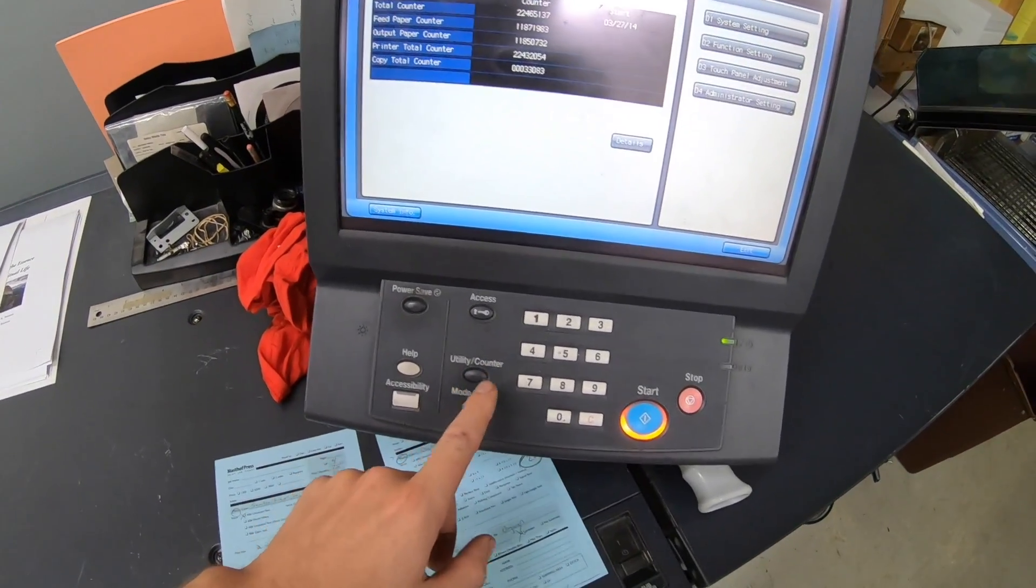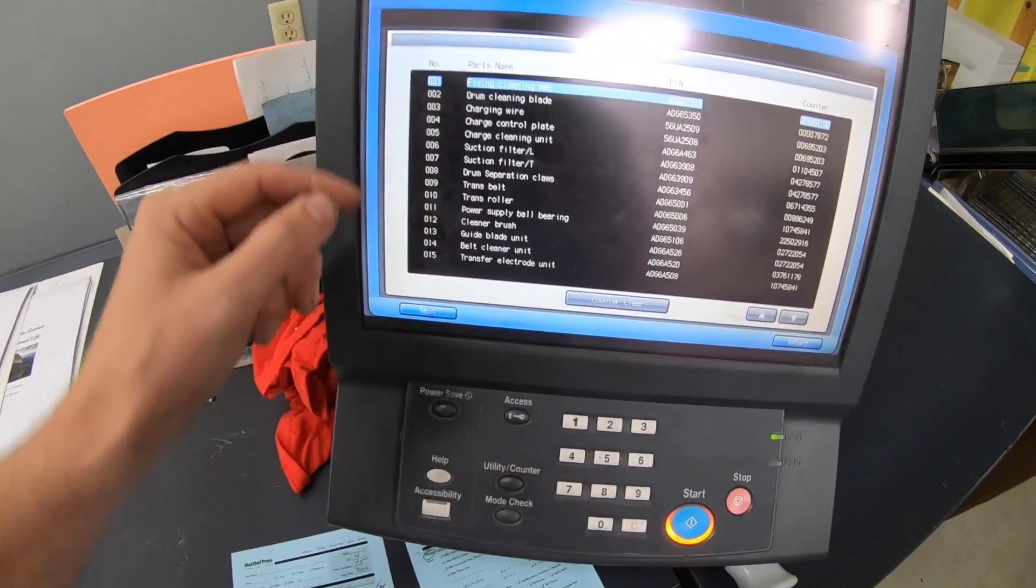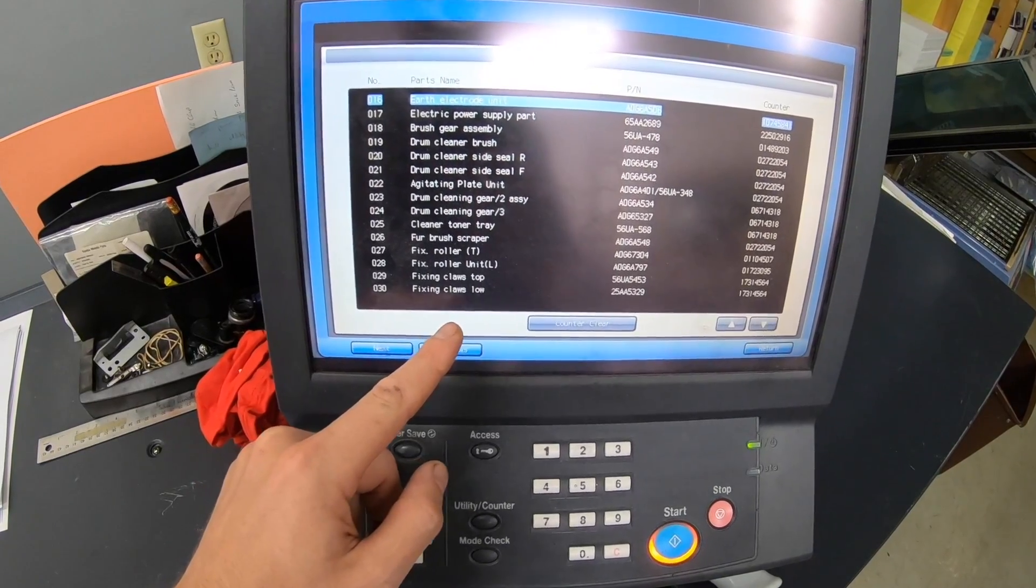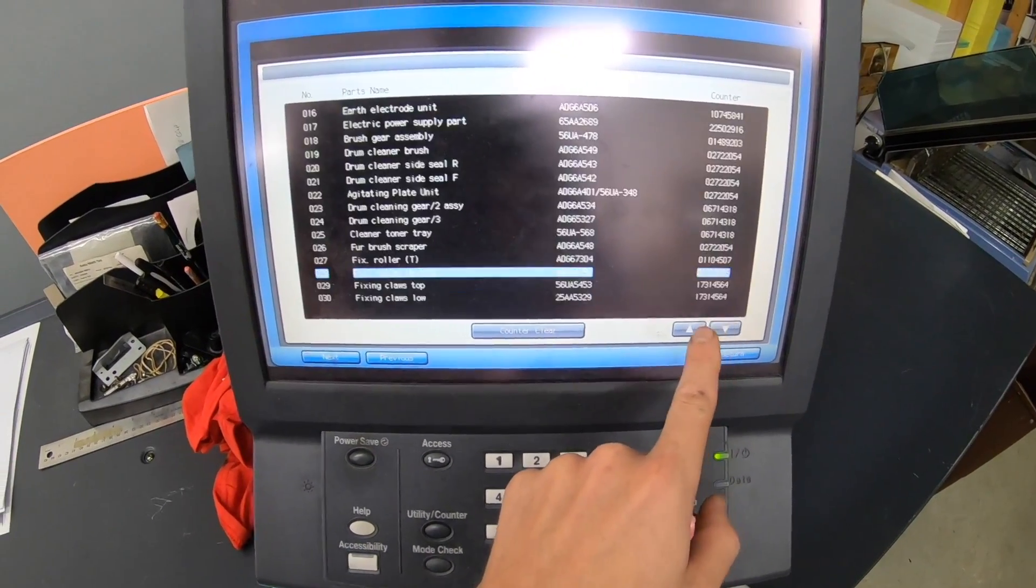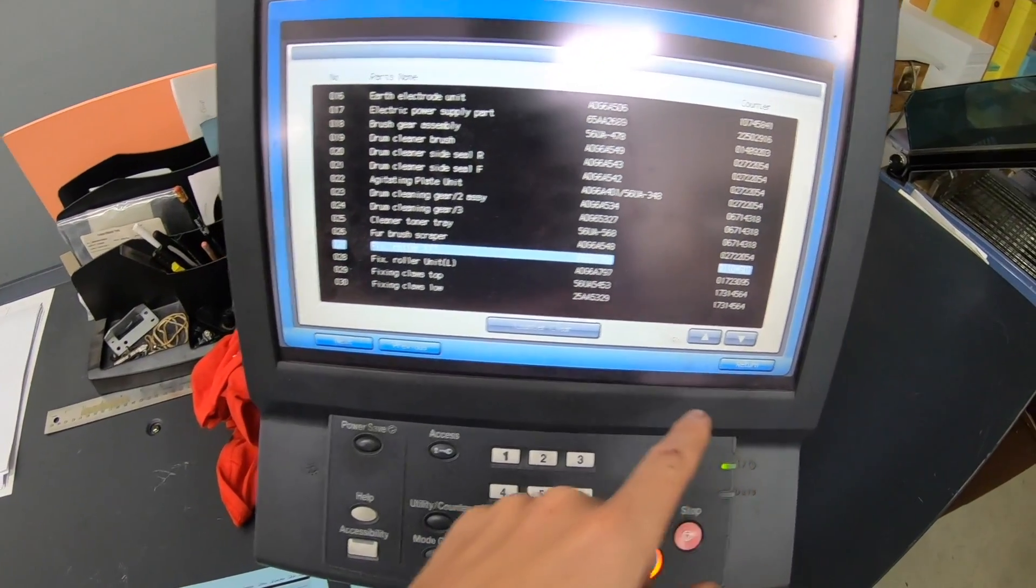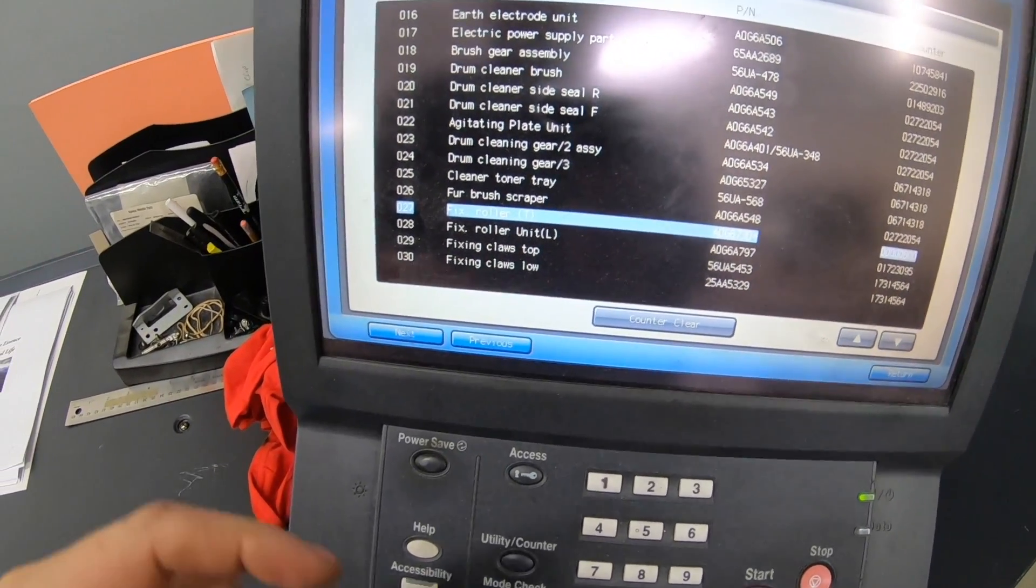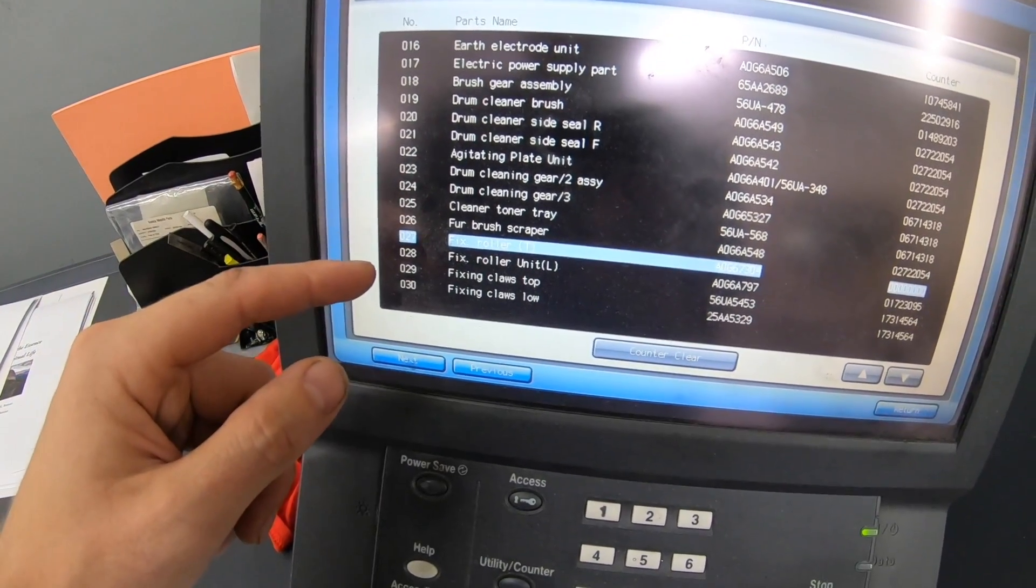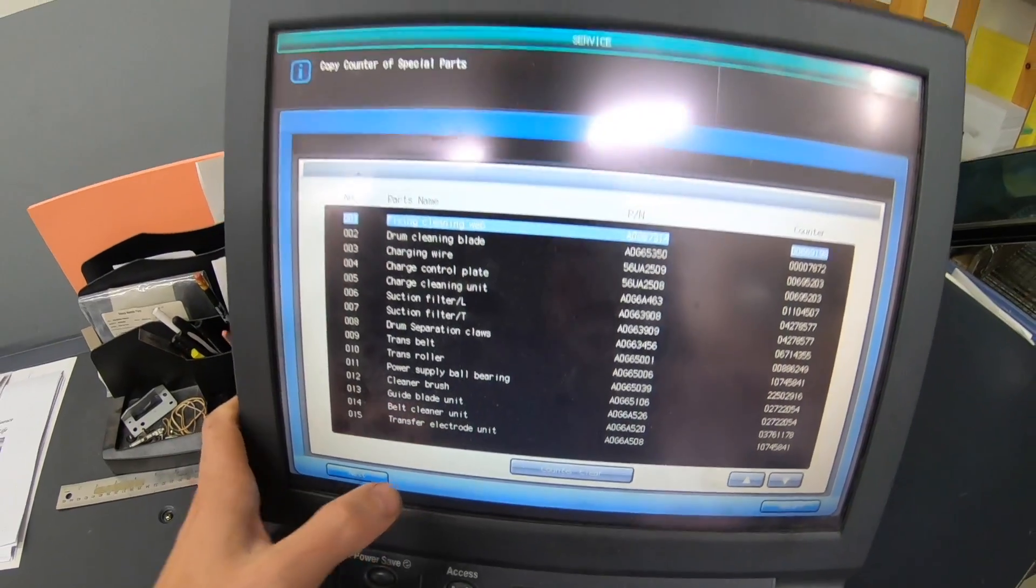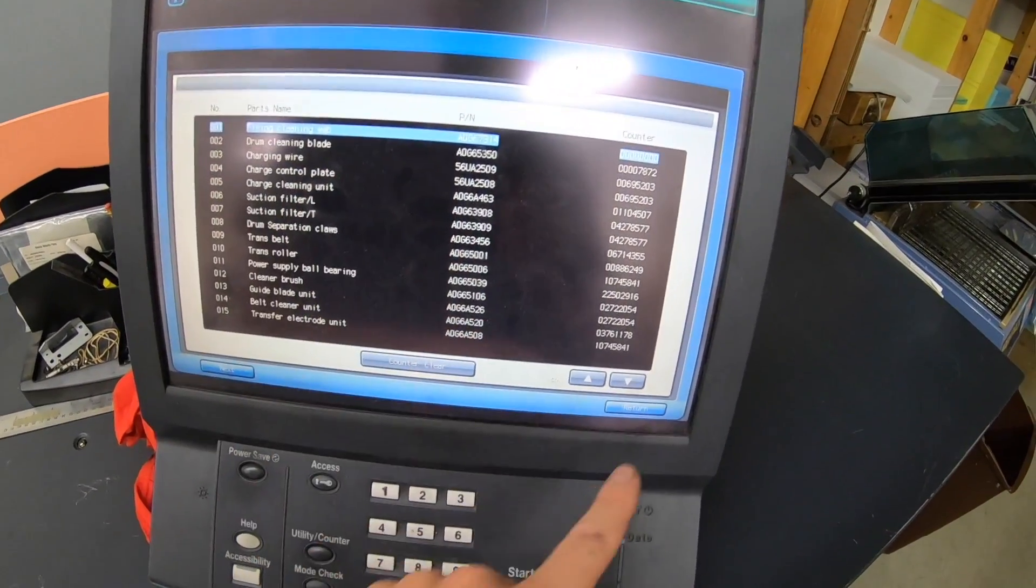And don't forget to go into your service mode here and clear the counter. Special parts counter. And then we go next. Fixing roller. Top fixing roller. That had a little over a million clicks on it. Let's clear that. And also, where would be the cleaner? Fixing cleaning web. Oh, it's the first one. Clear that one. So, then we're good.